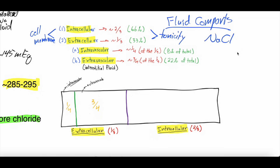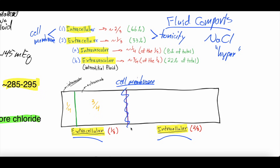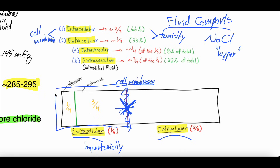Normal saline — sodium chloride — is hypertonic, so it has tonicity. If we're separating the extracellular fluid compartment from the intracellular fluid compartment by a cell membrane, sodium chloride does not readily cross this membrane because it is hypertonic. So the fluid does not cross into the intracellular space — it just stays in the extracellular space. But the intravascular and extravascular spaces are separated only by the blood vessel wall, and things can cross freely through there. So normal saline does cross freely between the intravascular and extravascular space.